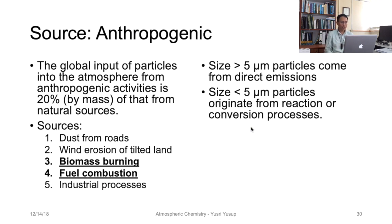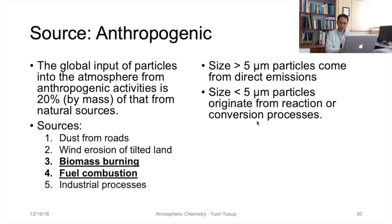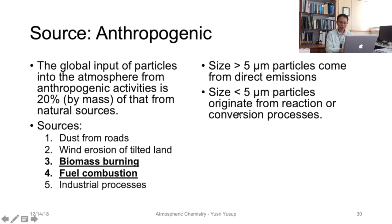The next source is the anthropogenic source. The global input of particles from anthropogenic activities is about 20 percent by mass of that from natural sources. Sources include dust from roads, wind erosion of tilled land, biomass burning, fuel combustion, and industrial processes. Anthropogenic aerosol emissions fall into two categories: particles greater than five micrometers, which typically come from direct emissions already in that size range, and particles less than five micrometers, which are formed in the atmosphere through conversion processes.